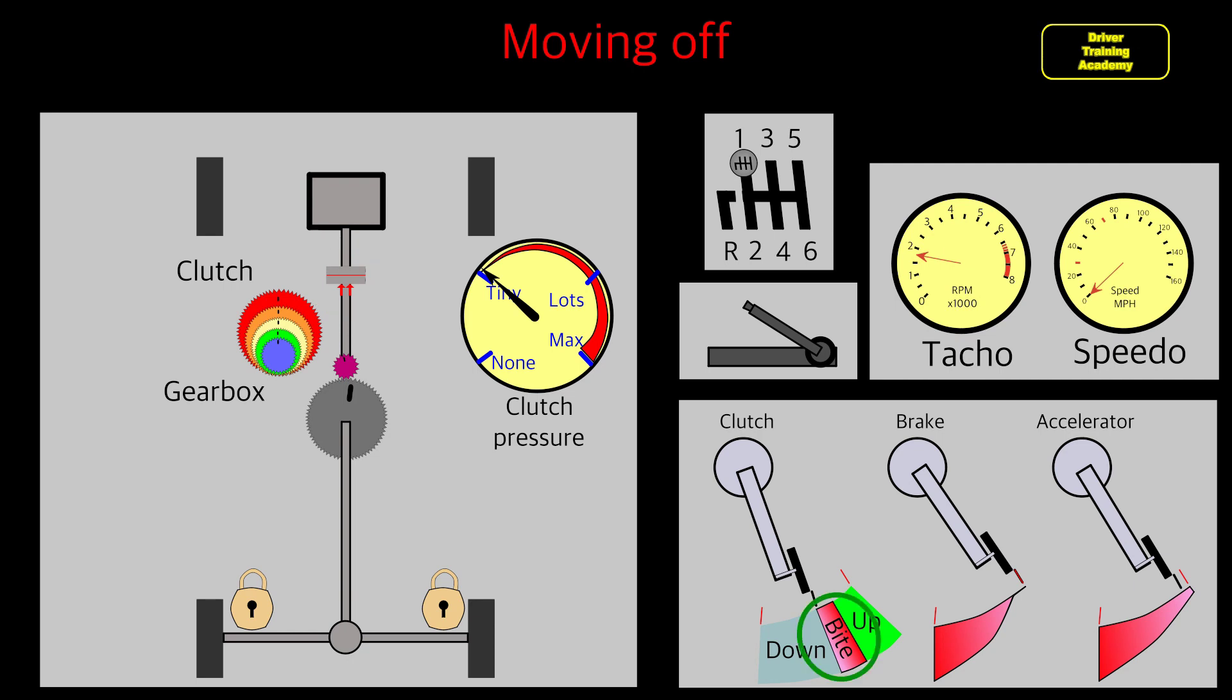Notice that the area described as the bite on the clutch pedal picture is quite small. The bite on the car you're driving could be higher or lower than shown in the diagram, but there should still be travel in the pedal below and above the bite. If you're very familiar with the car you're driving, you'll find the bite in a fraction of a second. Take your time until you're familiar with the car.